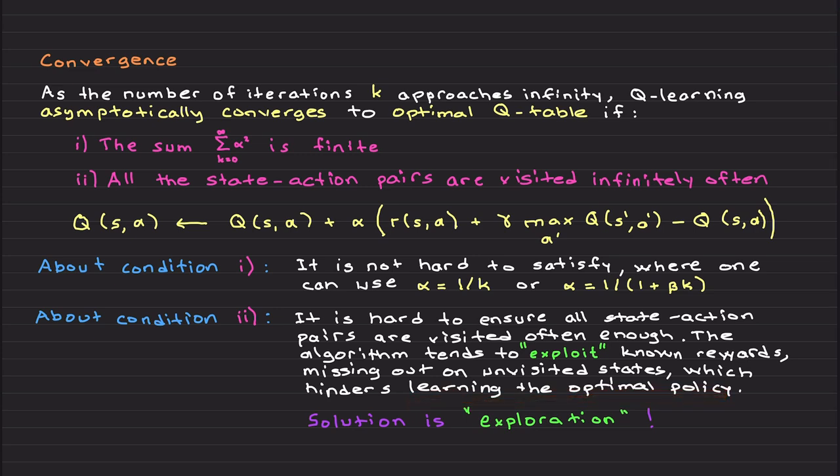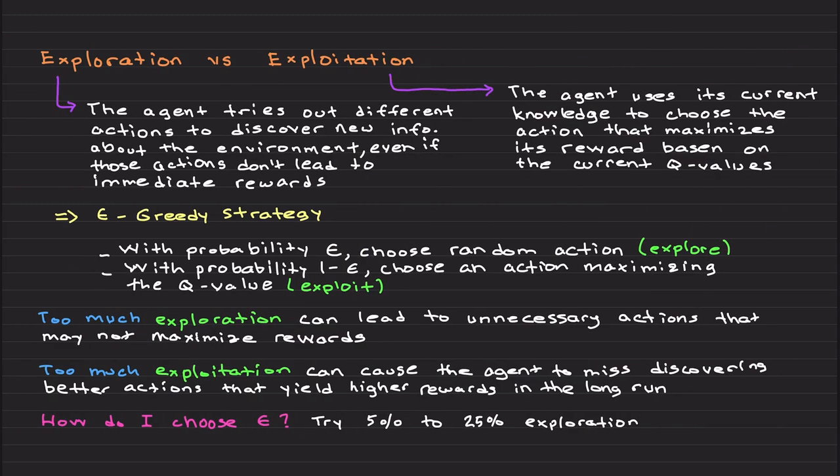In general, it is hard to ensure that you visit every state action pair often enough. Infinitely often means practically often enough. Basically, the algorithm tends to exploit known rewards, which causes missing out on unvisited states. And this hinders learning the optimal policy. But don't worry, there is a solution. And this solution is called, while using, basically, exploiting change, selecting actions that maximize a certain reward, which is called exploitation.